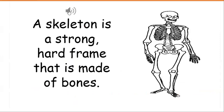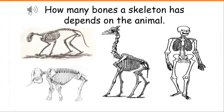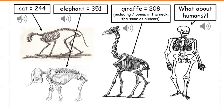A skeleton is a strong hard frame that is made of bones. How many bones a skeleton has depends on the animal. A cat has 244 bones, an elephant has 351 bones, and a giraffe has 208 bones.